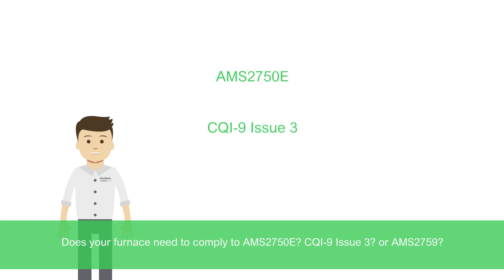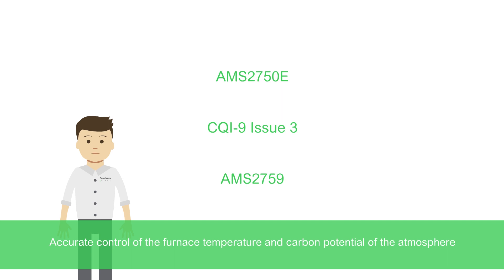Does your furnace need to comply to AMS 2750E, CQI 9 Issue 3, or AMS 2759? Accurate control of the furnace temperature and carbon potential of the atmosphere make it easier to meet the requirements of industrial heat treatment standards.